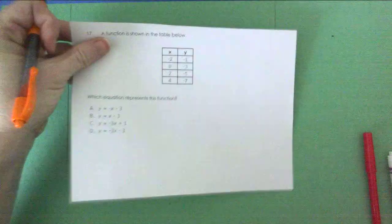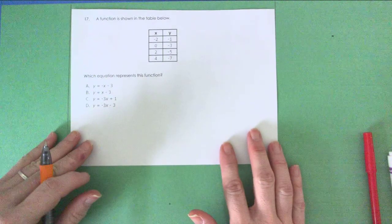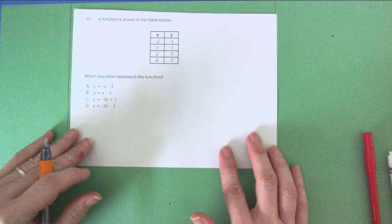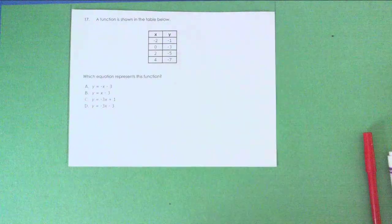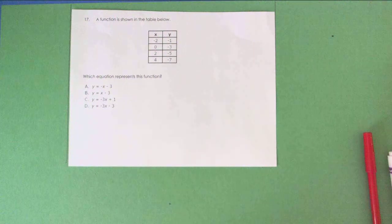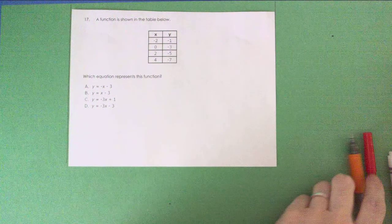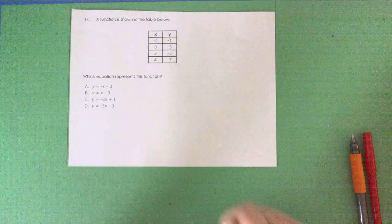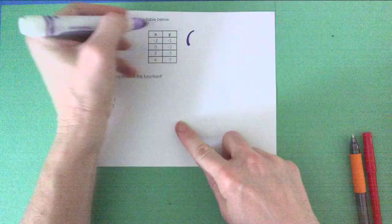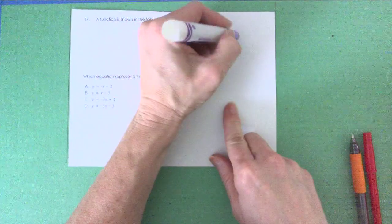And number 17, changing gears here, back to a table. A function is shown in the table below. Which equation represents the function? Again, there are really three different ways you could do this. My most fun way is to pick two points off the chart. I usually end up picking the first two. I might pick something like negative 2, negative 1, and 0, negative 3.